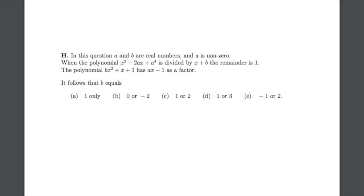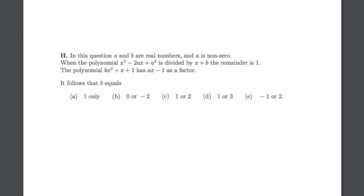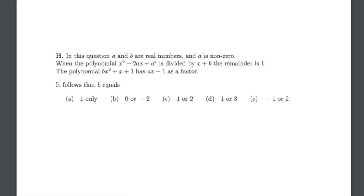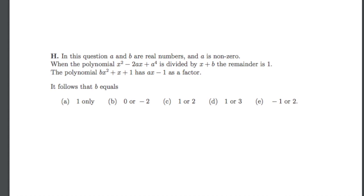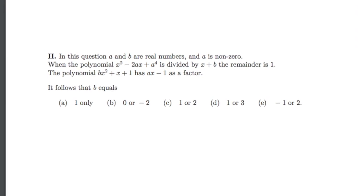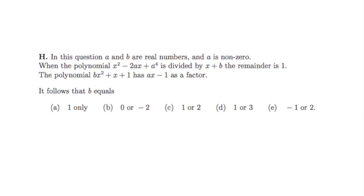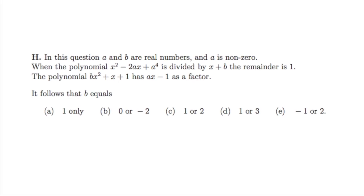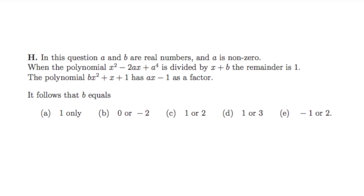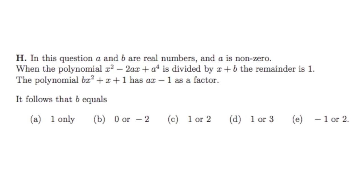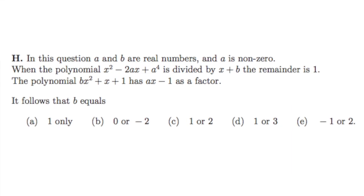Hey everyone, today we're going to look at question 1h of the 2017 MAT exam. We are given that a and b are both real numbers, and that a is non-zero. Then we're told that the polynomial x squared minus 2ax plus a to the fourth is divided by x plus b, with remainder 1. Also, the polynomial bx squared plus x plus 1 has ax minus 1 as a factor. From this, we need to work out what the value of b is.